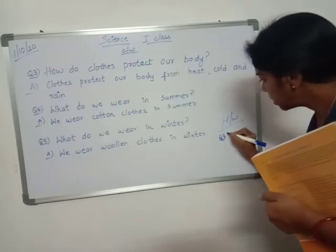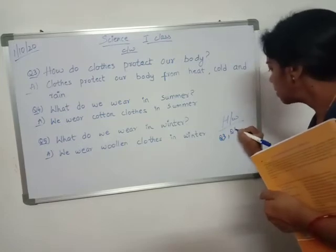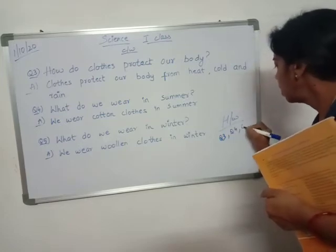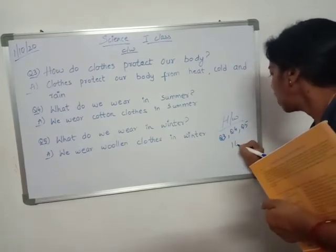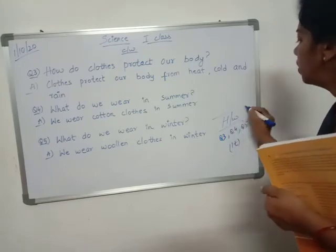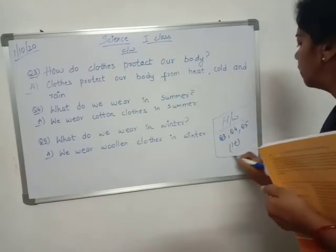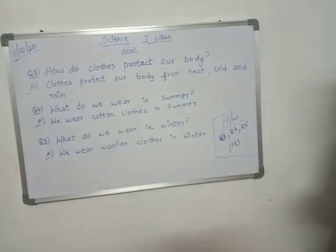Question number three, question number four, and question number five — write them one time, children, for homework. For homework, you write these three question answers again.